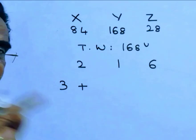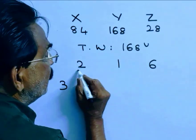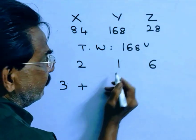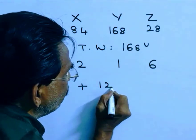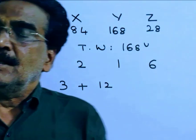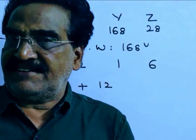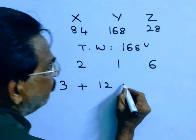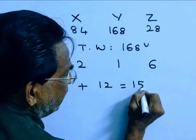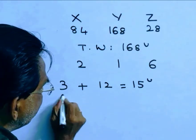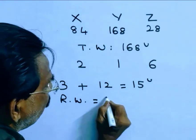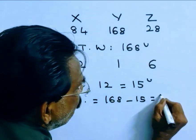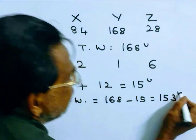So in these 4 days X and Y can complete 4 times 2 plus 1. 2 plus 1, 3. 4 times 3, 12 units of work will be completed. So in the first 7 days, 3 plus 12, 15 units of work is completed. And the remaining work is equal to 168 minus 15. That is equal to 153 units.